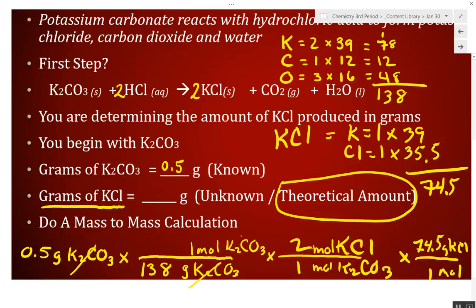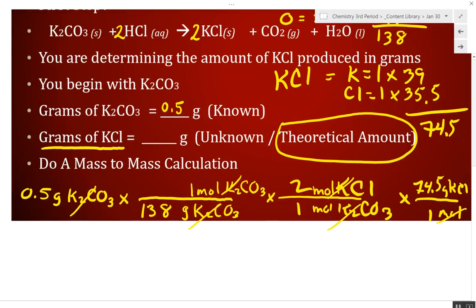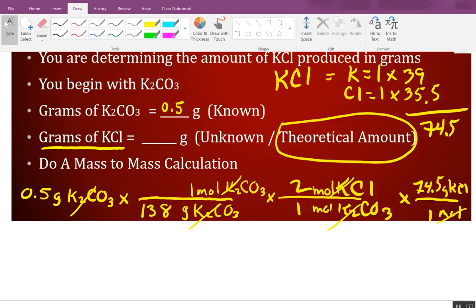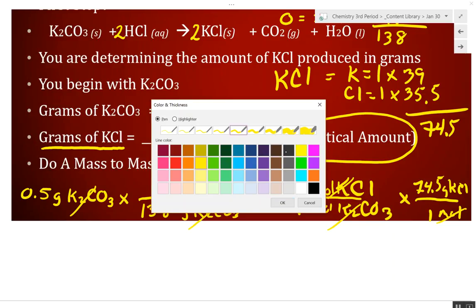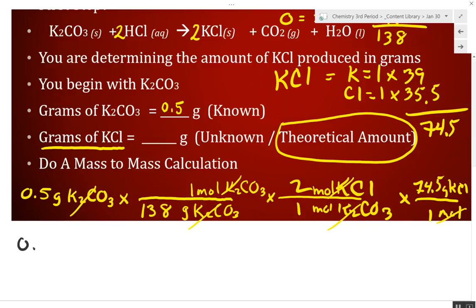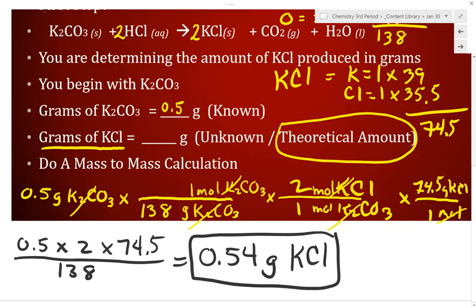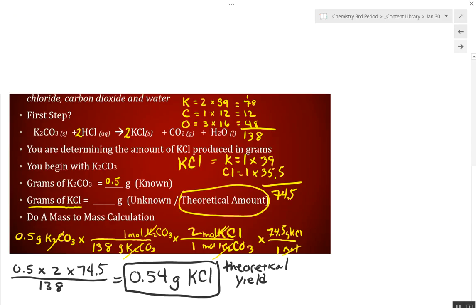Grams cancel. Moles cancel. Moles cancel. Moles cancel. So, I need one of you to take 0.5 times 2 times 74.5 divided by 138. So, 0.54 is what... This is your theoretical yield. This is what you should have got and everything worked perfectly in the lab.